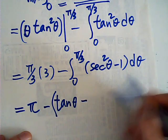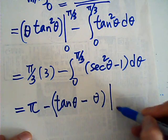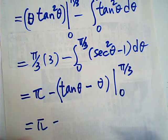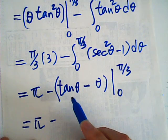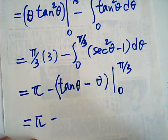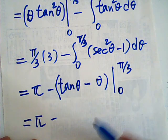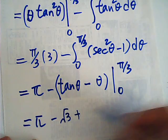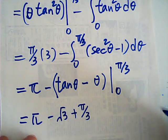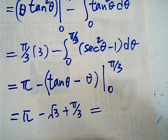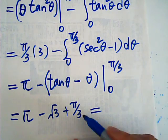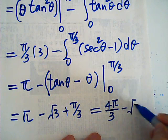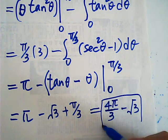So this equals pi over 3 times 3, minus tangent of pi over 3 minus pi over 3, and plus 0 since tangent 0 is 0. The result is equal to pi minus root 3 plus pi over 3, giving us 4pi over 3 minus root 3. So that is my answer.